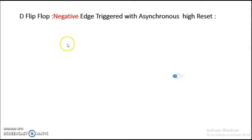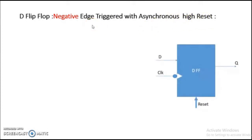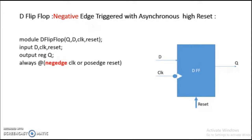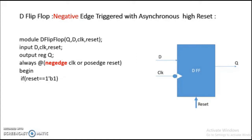Now let us take the second case: designing a D flip-flop that is negative edge triggered with an asynchronous active-high reset. Here the reset is high, so the output should be reset when reset is high. Since it is negative edge triggered, we write negedge before clock. Since we want asynchronous reset when reset becomes high, we write posedge before reset in the sensitivity list. Inside the always block: if reset is high, Q is reset to zero; else Q is same as D.